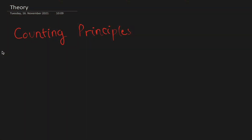Welcome to Meunsad. Today we will cover the topic Counting Principles, a grade 11 math AA topic in the IB. The topic mainly focuses on calculating the total amount of permutations or combinations in a given situation.